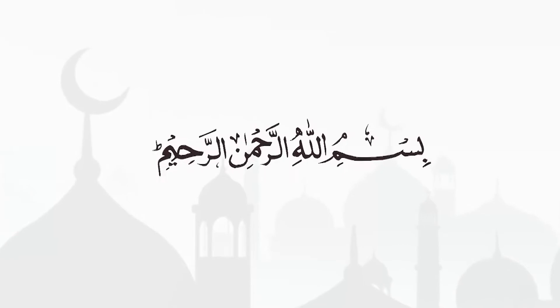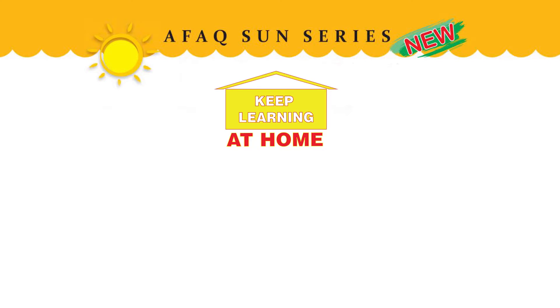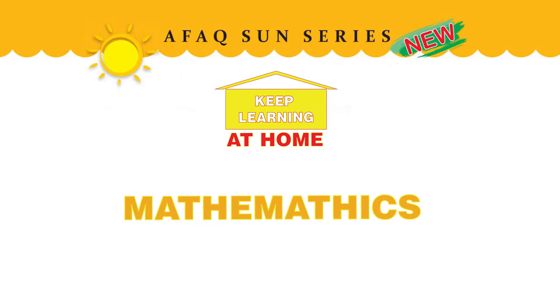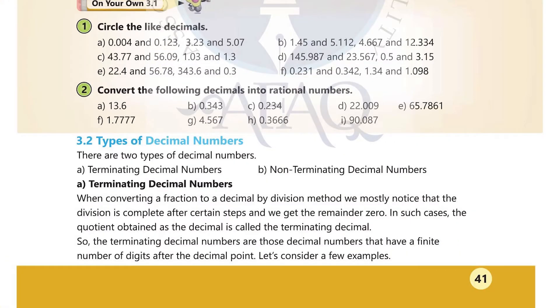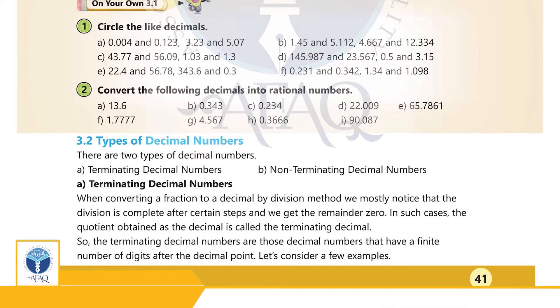Afaq News and Series Student Resource Pack — Keep Learning at Home. Mathematics Grade 7, Academic Planner, Unit 3. Topic 3.2: Types of Decimal Numbers, Page 41.